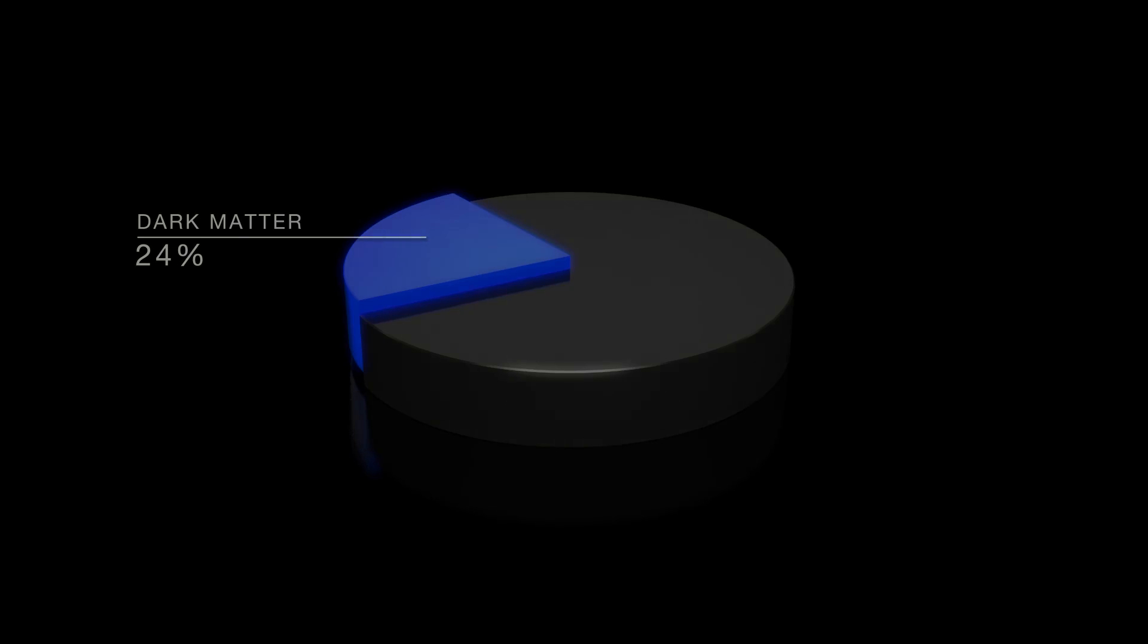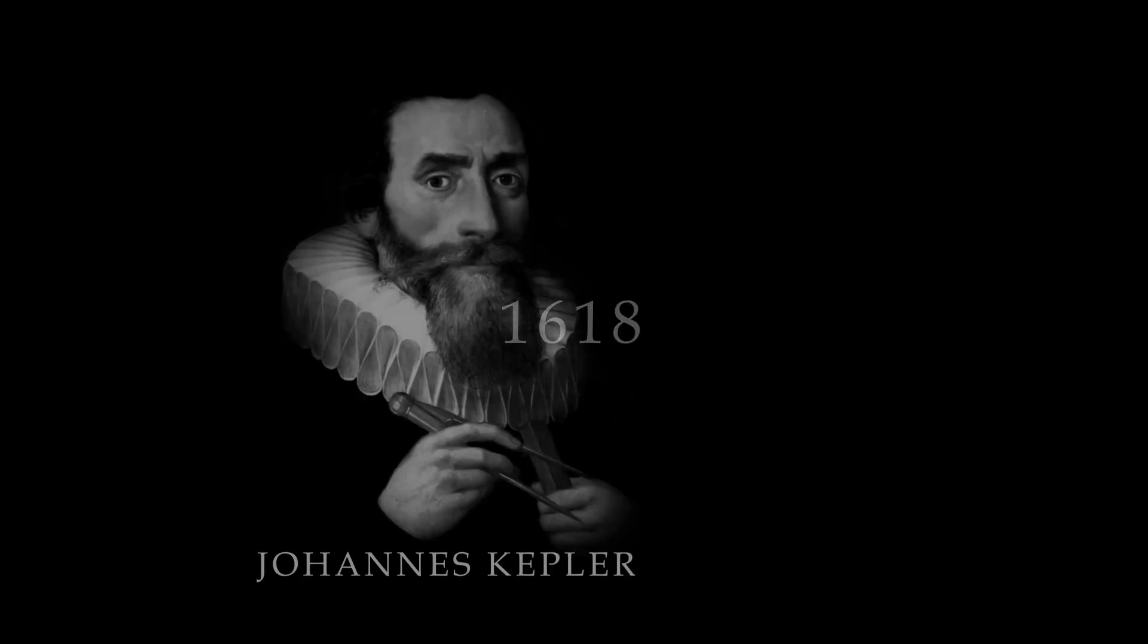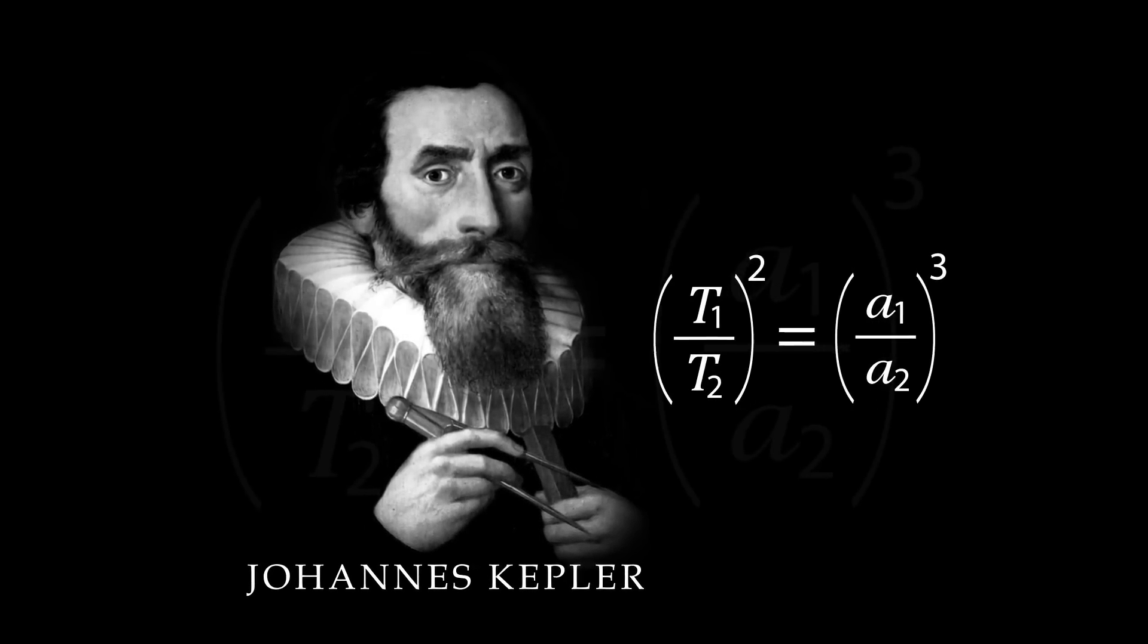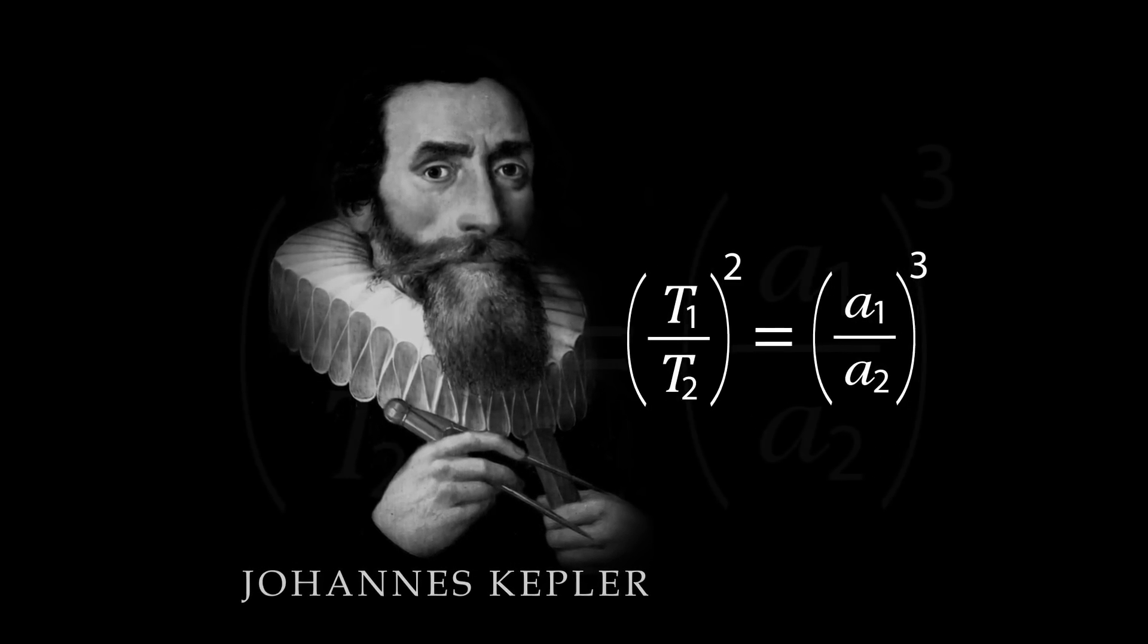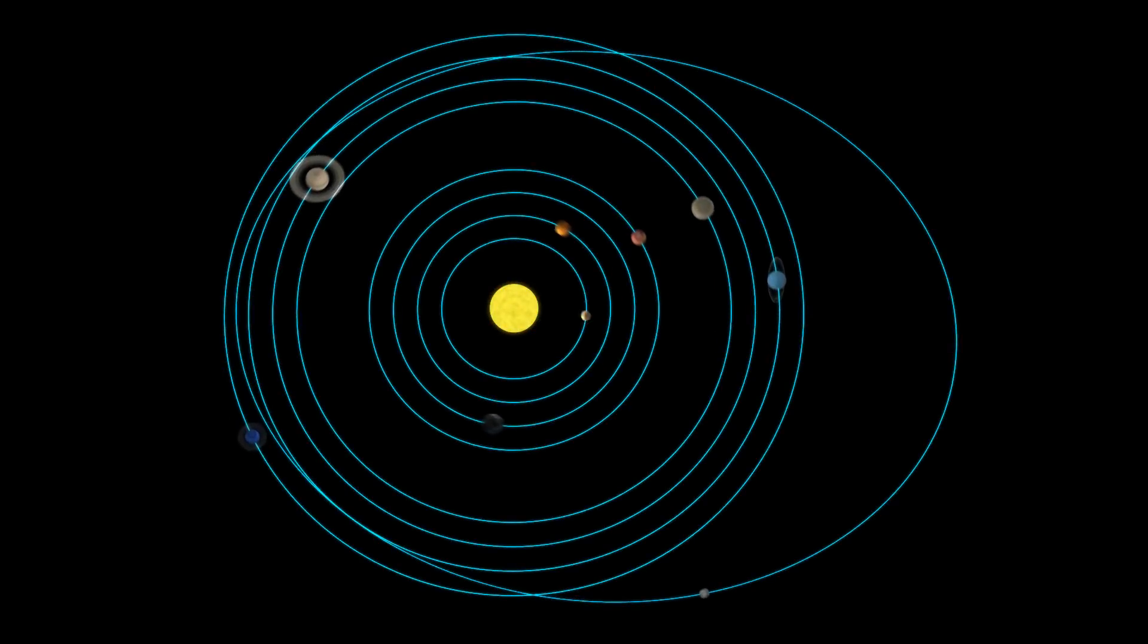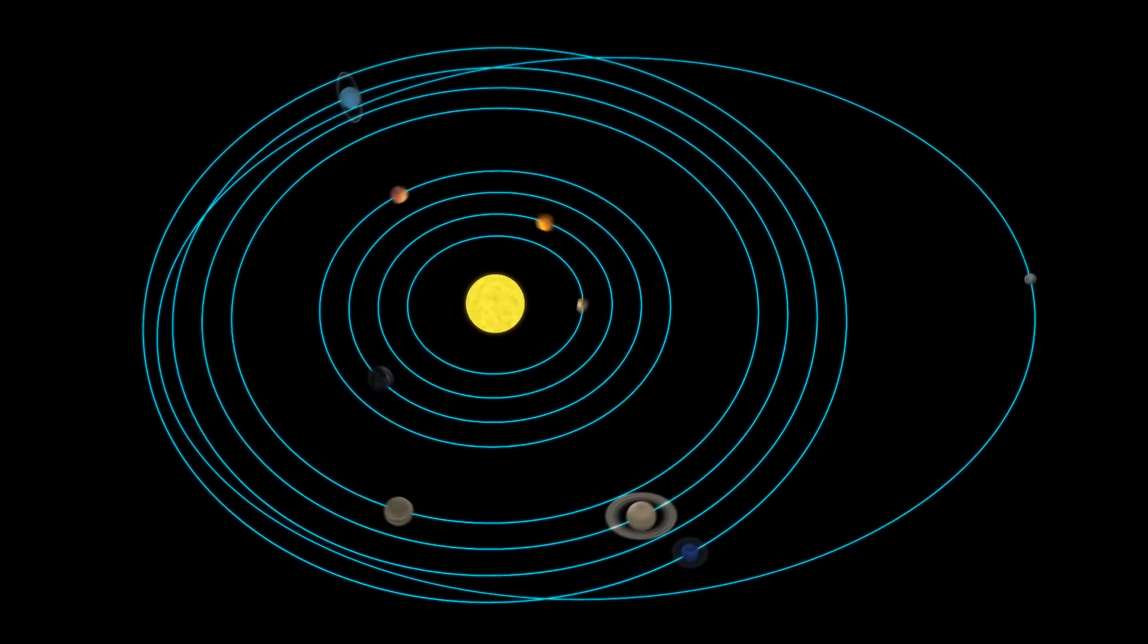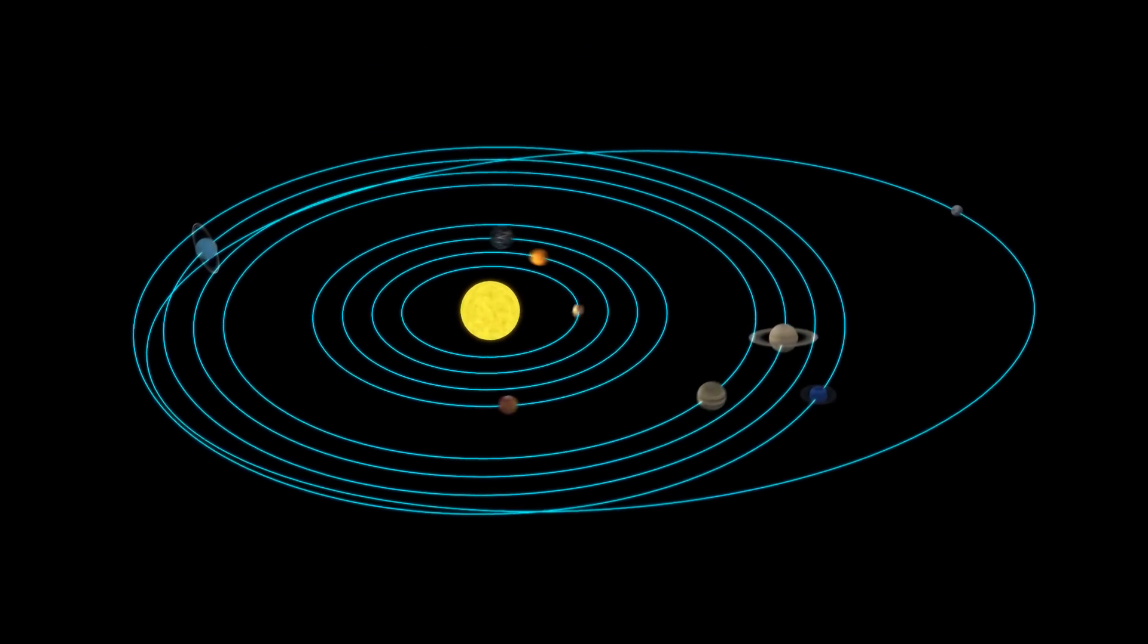Let's look a bit closer at the planetary motion in our solar system. In 1618, Johannes Kepler described the orbital velocity of the planets orbiting the Sun with his third law of planetary motion. It is important to know that the Sun contains about 99.9% of the total mass of the solar system.